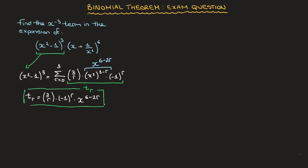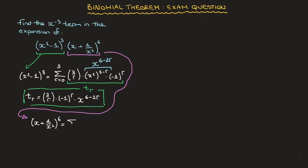Now we do the same for the second binomial. The binomial theorem states that x plus 1 over x squared raised to the power of 6 equals the sum from p equals 0 up to 6 of the binomial coefficient 6p times x raised to the power of 6 minus p times 1 over x squared raised to the power of p. Notice that I've used the letter p instead of r — that is very important. Always use a different parameter in each of the two general terms.